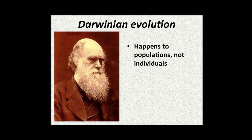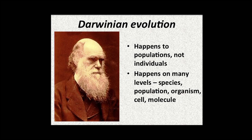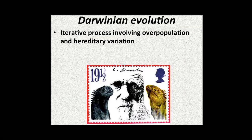Some of the principles Darwin lived by: evolution was occurring in populations, not in individuals. It happens at every level — species, population, organisms, cell, molecule — and every aspect contributes to that evolutionary process. It's an iterative process involving overpopulation and hereditary variation, so not surprisingly, in a setting of overpopulation, something wins out and something loses — and the same is true in cancer.